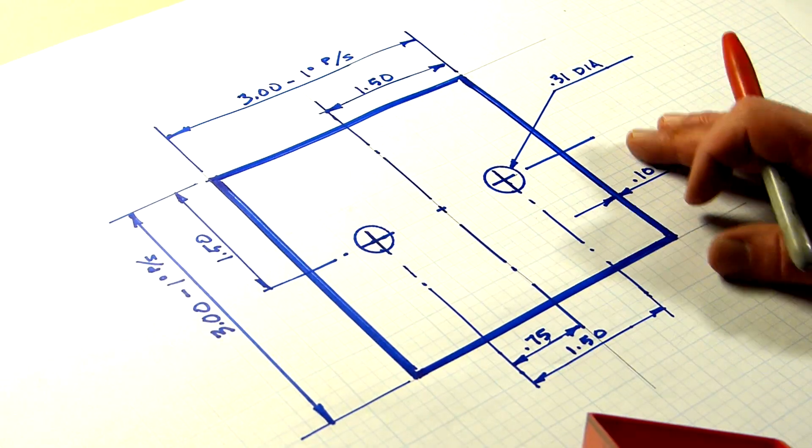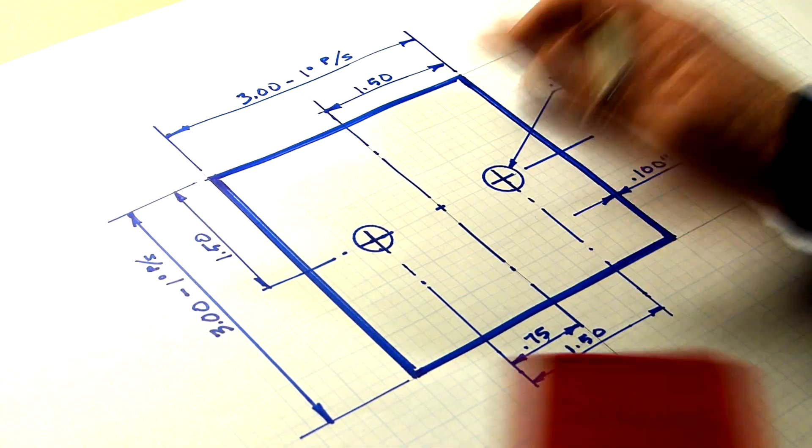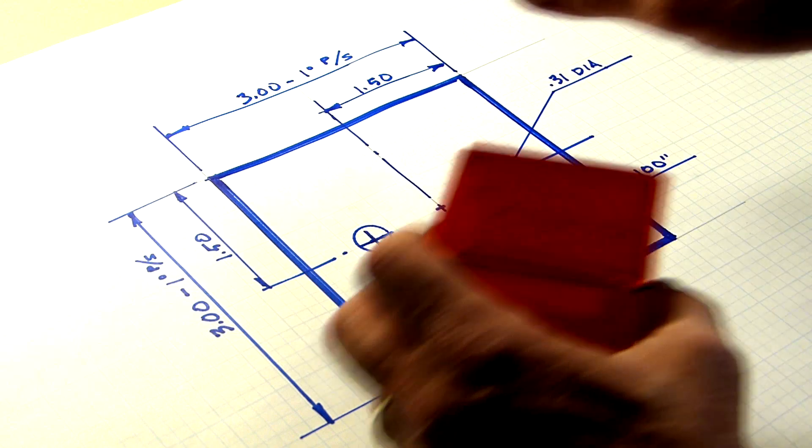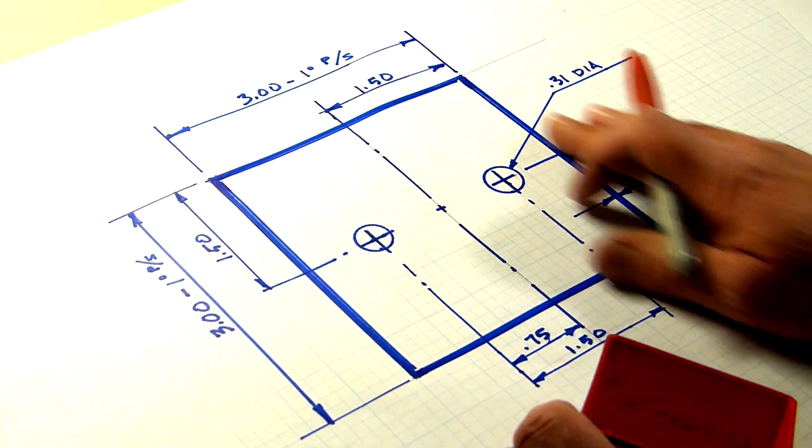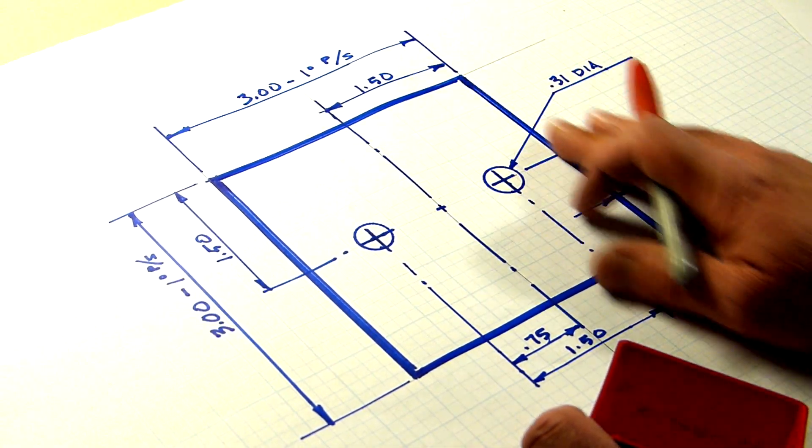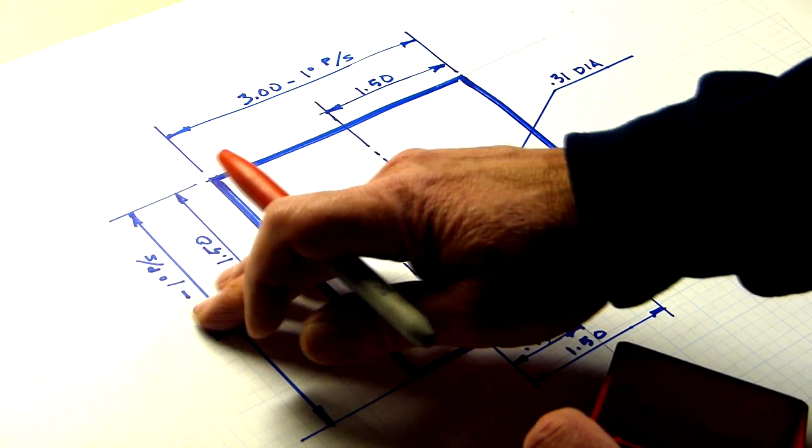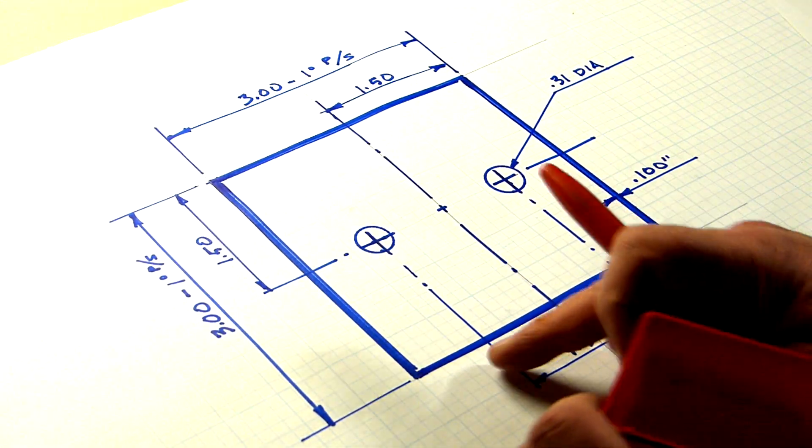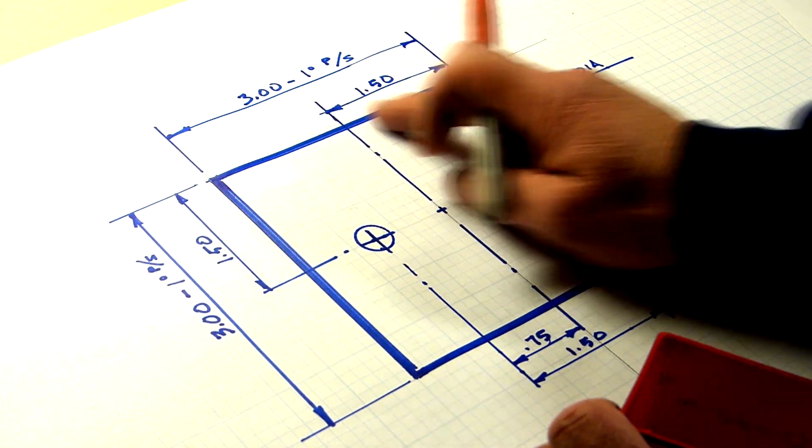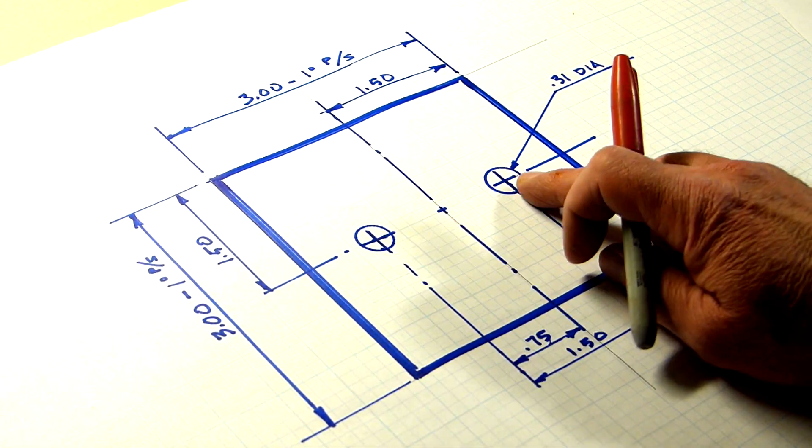So I drew this two to one, three inch box minus one degree per side draft. We'll talk about that later. You might have already kind of figured that out from some of my other videos. Three inch by three inch, inch and a half to the center line, inch and a half to the center line, and they want a couple of holes in here.